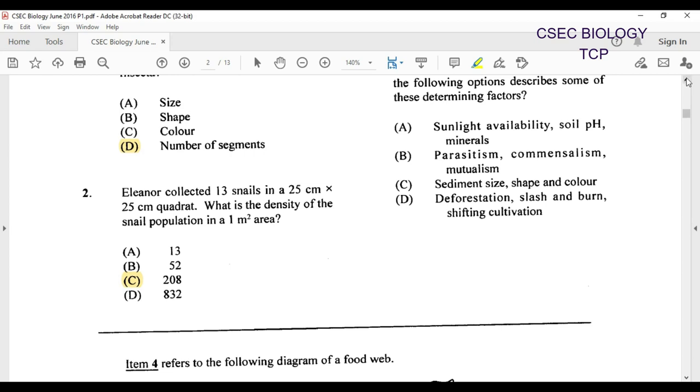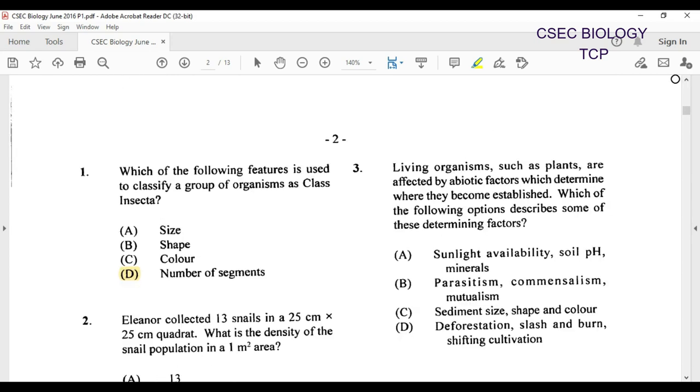We move on to question number three. Living organisms such as plants are affected by abiotic factors which determine where they become established. Which of the following options describes some of these determining factors? So we're looking at abiotic factors. A has some abiotic factors there, B has biotic factors. C and D, they are somewhat outlier. Yes they have impact on the environment, but we're looking at biotic and abiotic factors. Our most suitable answer here would have been A.